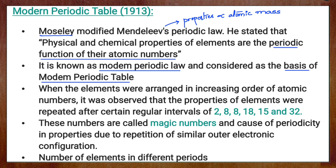Elements were arranged in increasing order of atomic number, and it was observed that properties of elements repeat after regular intervals — what we call a periodic function. Properties of elements are observed to repeat at regular intervals of 2, 8, 8, 18, 18, and 32. These numbers are called magic numbers.